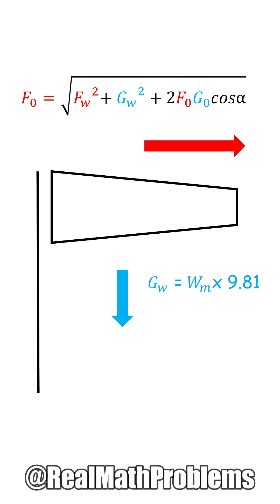And the gravitational force is calculated by the windsock weight, which is 0.9 times 9.8 and equals 8.82 newtons.